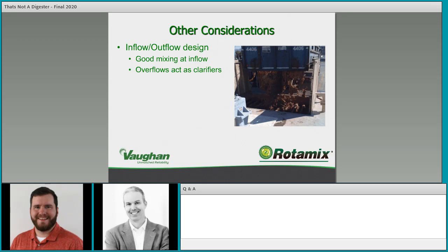You can keep heavier solids off the bottom with good mixing, but they won't exit the system via an overflow — eventually they'll collect and overwhelm the system. If you have an overflow design, you can look at changing to a withdrawal point, or adding a withdrawal point and alternating between the two. A withdrawal point near the bottom and in the center is recommended. Even with a shallow cone or flat floor, things tend to migrate toward the middle, making that your best withdrawal point to keep things moving through your facility.